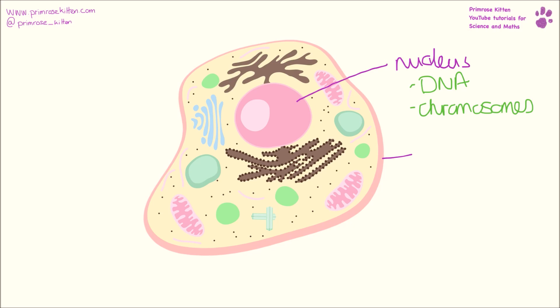On the outside we have our cell membrane. This is responsible for controlling what goes in and out of the cell. This is different to a plant cell, which has a cell membrane and a cell wall. An animal cell just has a cell membrane.